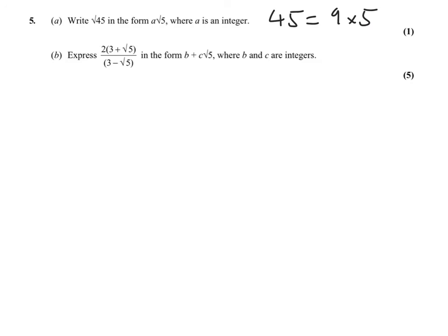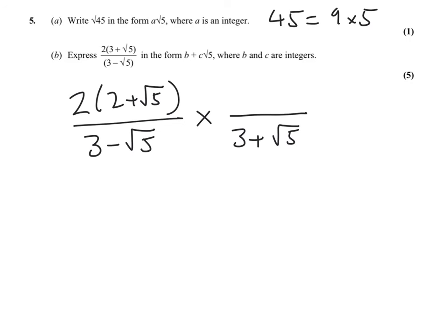For part B, we've got to rationalize the denominator. So you're going to be doing... we've got 3 minus root 5, so you need to times that by the special 1, which is going to be (3 + root 5) over (3 + root 5). Multiply all that out, you should end up with something in this form as they suggest.